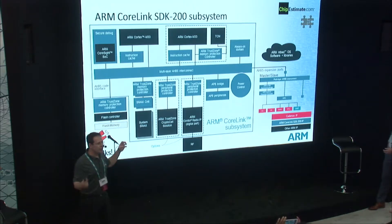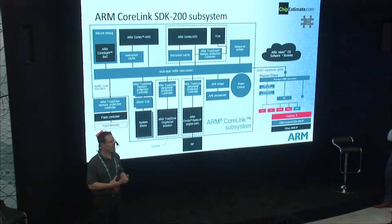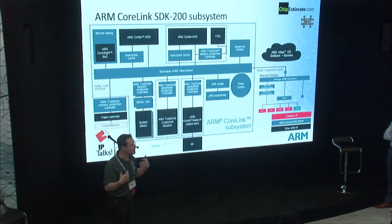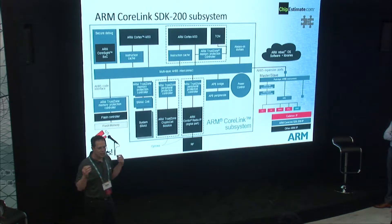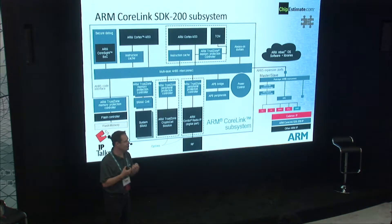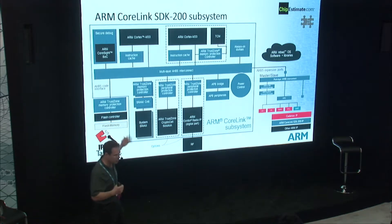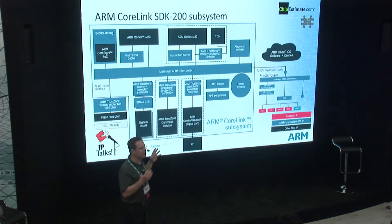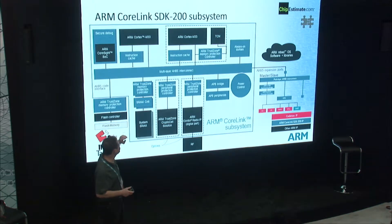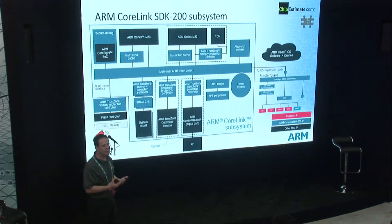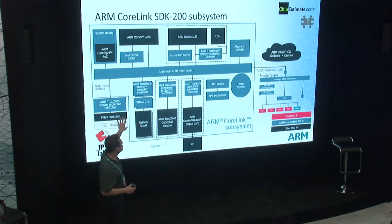One of the ways we try to help our customers at ARM is to implement what we call subsystems. Subsystems are pre-assembled systems or mini systems that you can plug into your design and you are sure they can operate directly because they have been fully validated. Here you see the SSE-200 subsystem, which is part of the System Design Kit SDK-200 as well. This subsystem is designed for secure IoT applications, and we have implemented plenty of security features. We started with the Cortex-M33 processor, which implements TrustZone security.